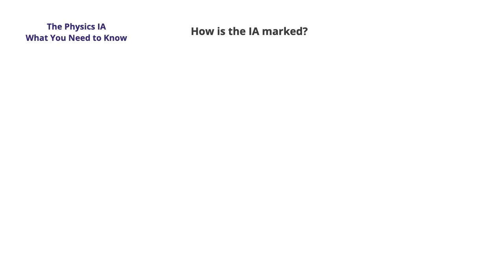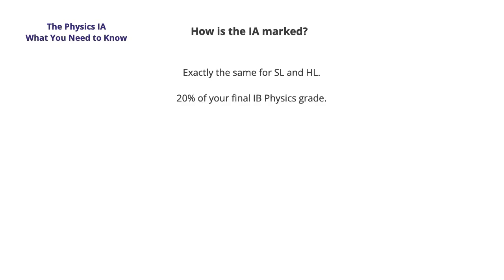The marking of the IA in SL and HL is exactly the same. Many students think that in HL they need to do more complicated physics, but that is not true. The misunderstanding might come from math, where some criteria are slightly different for SL and HL. You probably already know that the IA is 20% of your final grade, with the remaining 80% coming from your exams.